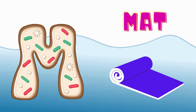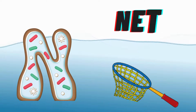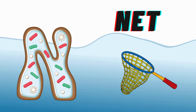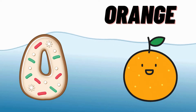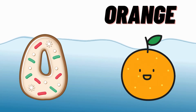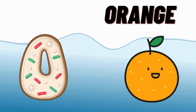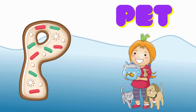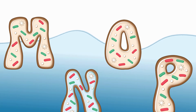M is for Mat, M-M-Mat. N is for Net, N-N-Net. O is for Orange, O-O-Orange. P is for Pet, P-P-Pet.